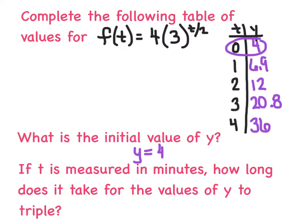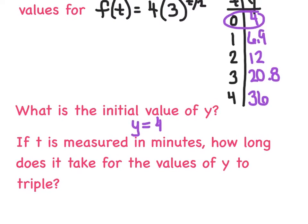And again, how long does it take before the values of y triple? And we say, we went from 4 to 12. That tripled. And then from 12 to 36. That was another triple. So about every 2 minutes again. So what you're really seeing here is this value dictates the initial value. And this value up here dictates how long it takes before they triple. And the idea of tripling comes from the base.